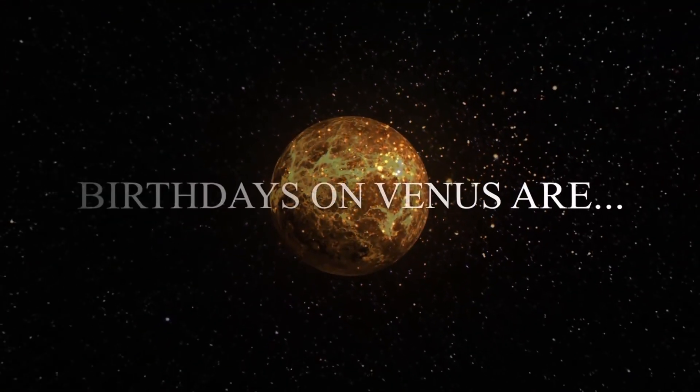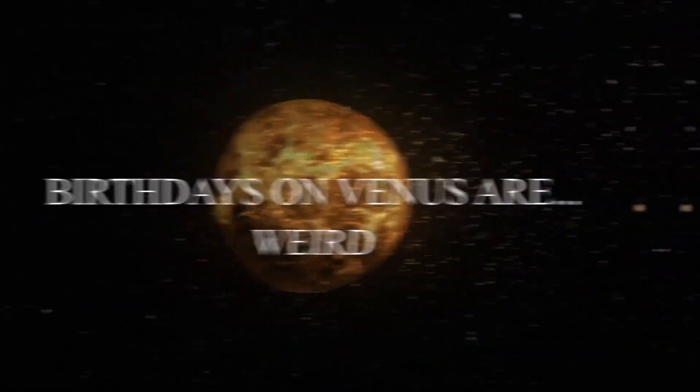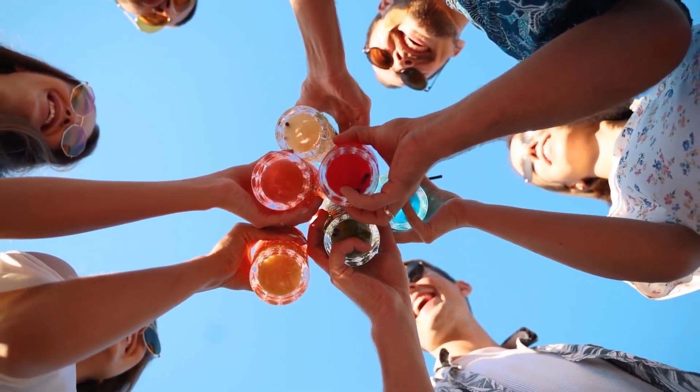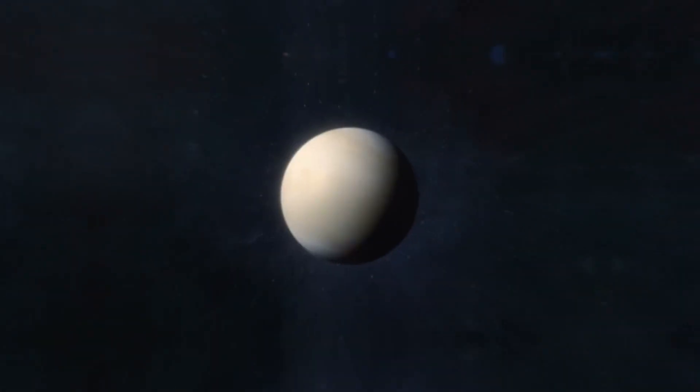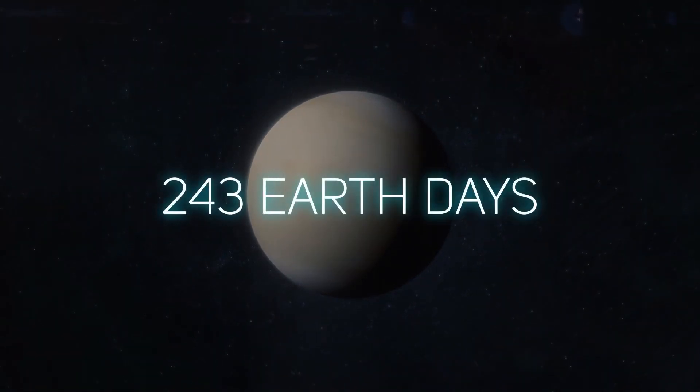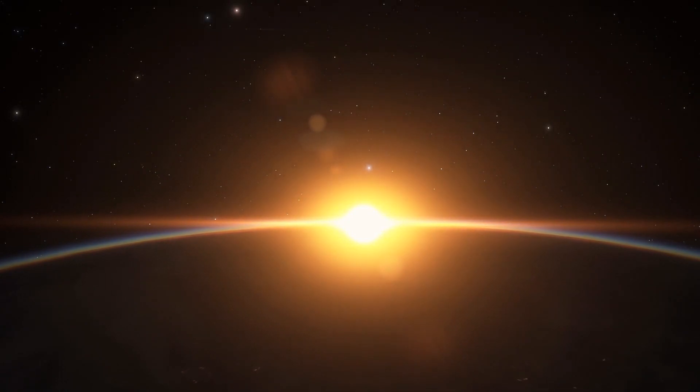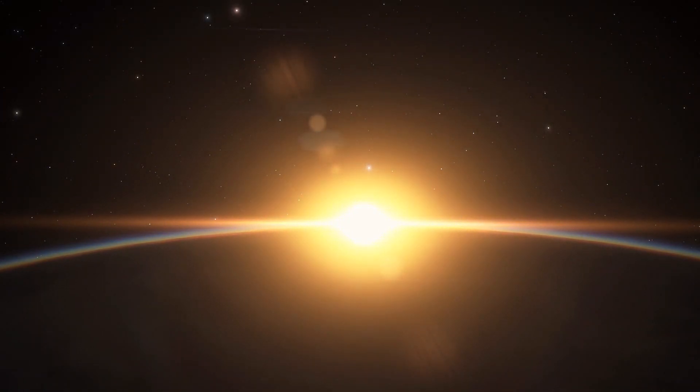And then there's the opposite. Number four: Birthdays on Venus are weird. That's right, boys and girls, good luck figuring out when your pool party is this year. See, when you live on Venus, each full day takes 243 Earth days. Complicating this is that an actual solar day, the time it takes for the sun to rise, set,